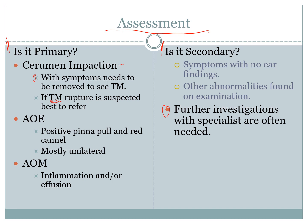Otitis externa is defined as an infection or inflammation of the ear canal itself. Around 10% of people will get it within their lifetime, with 90% of all cases being unilateral. A majority of cases are in adults, with strong association with high humidity, high temperatures, swimming, local trauma such as ear buds, and diabetes. The hallmark symptoms are ear pain and a positive pinna pull.